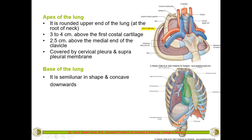The base of the lung is in contact with the dome of the diaphragm. Its shape is almost semi-lunar — half moon — because of the presence of the liver on the right and the dome of the diaphragm itself. It is concave, facing downwards.